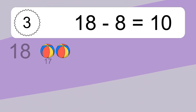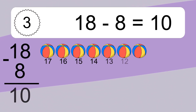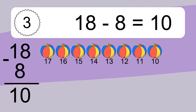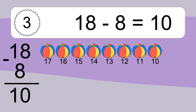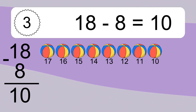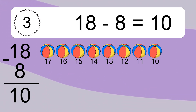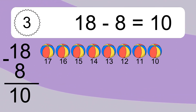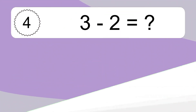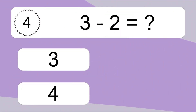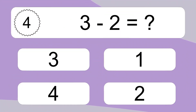18 minus 8 equals what? 18 minus 8 equals 10. Let's count it: 17, 16, 15, 14, 13, 12, 11, 10.